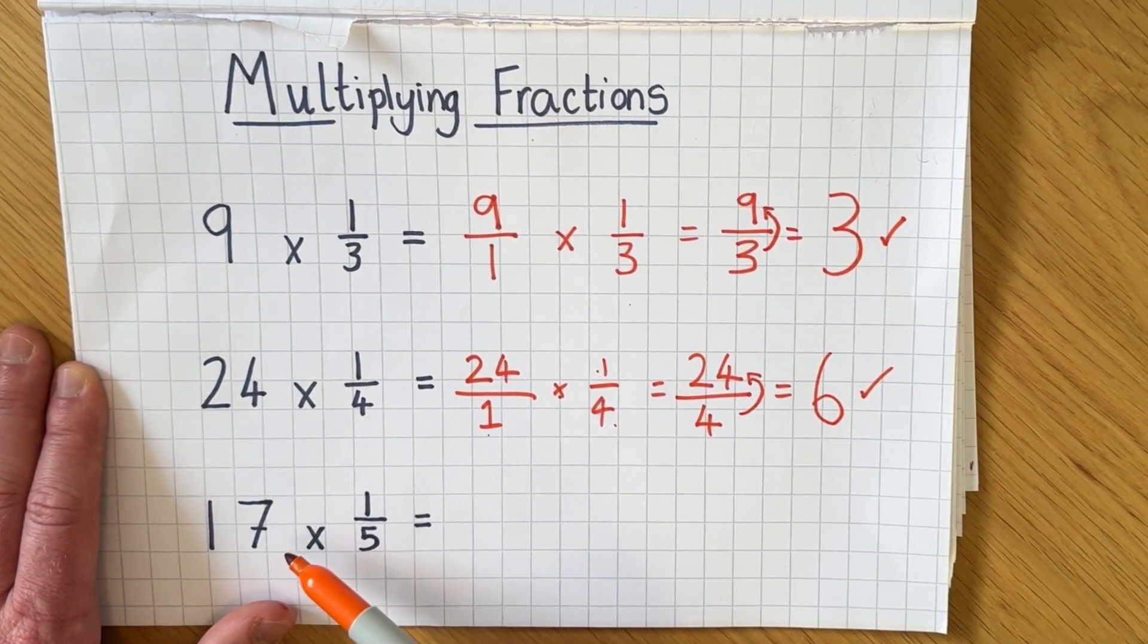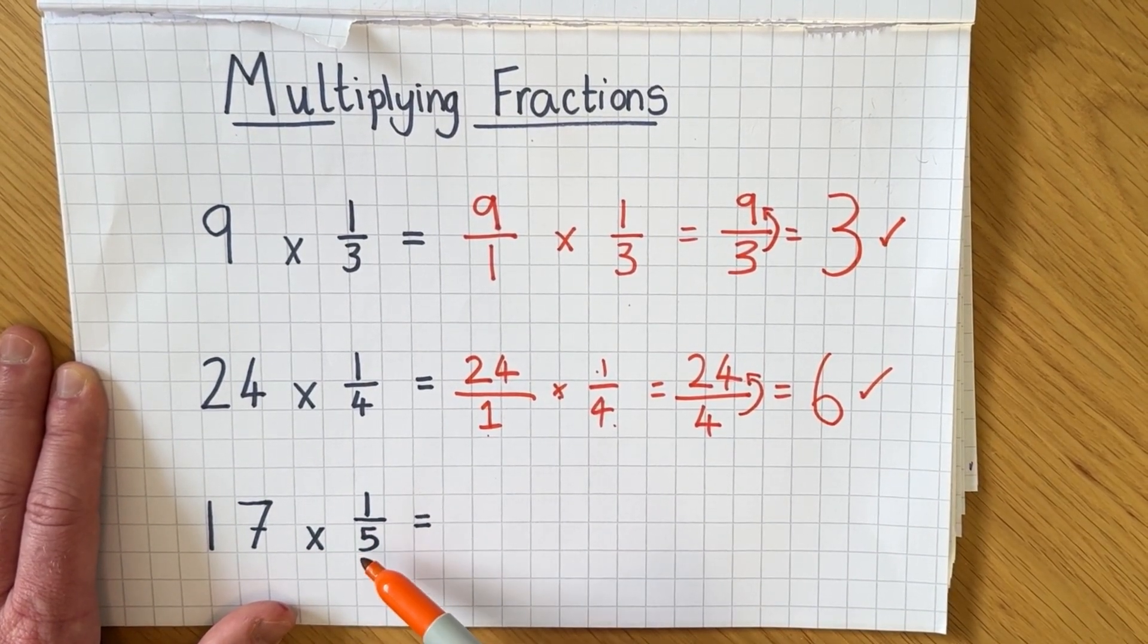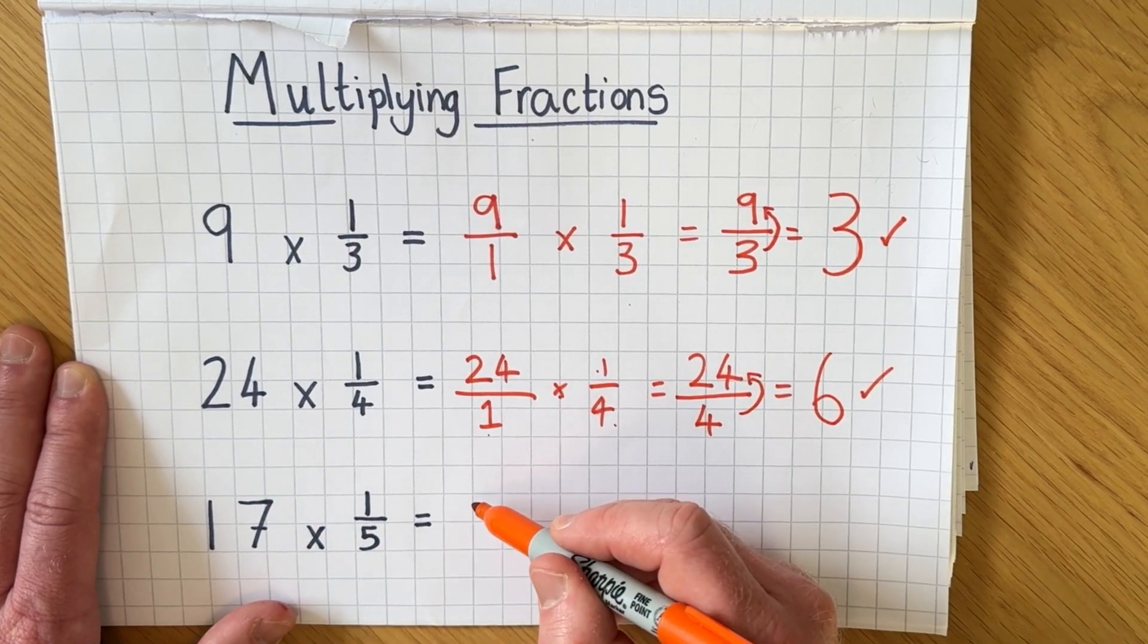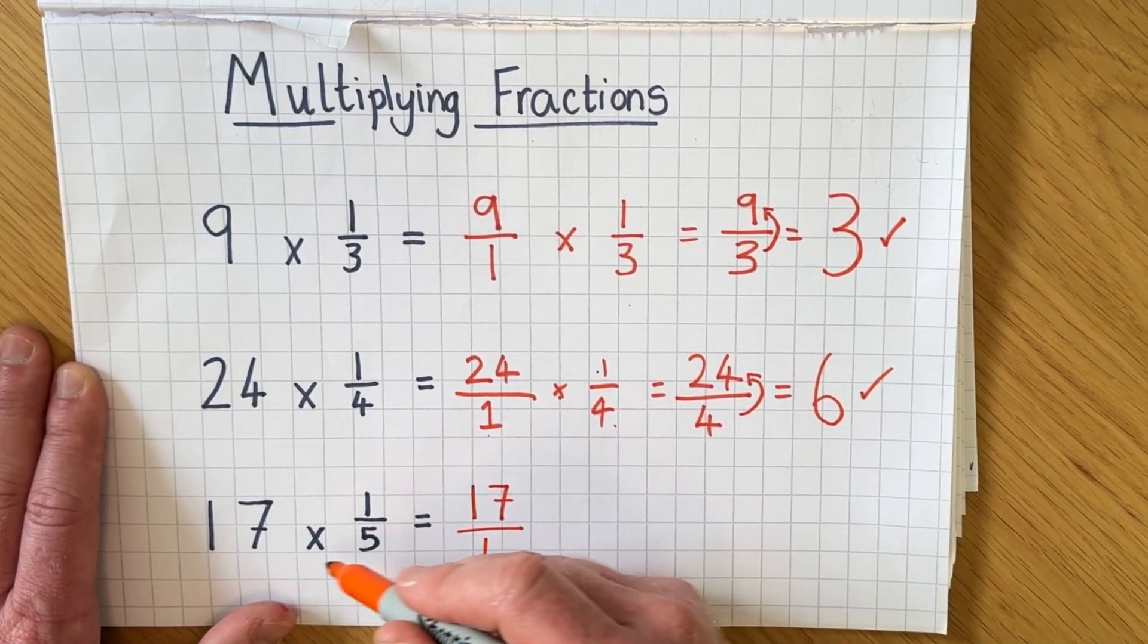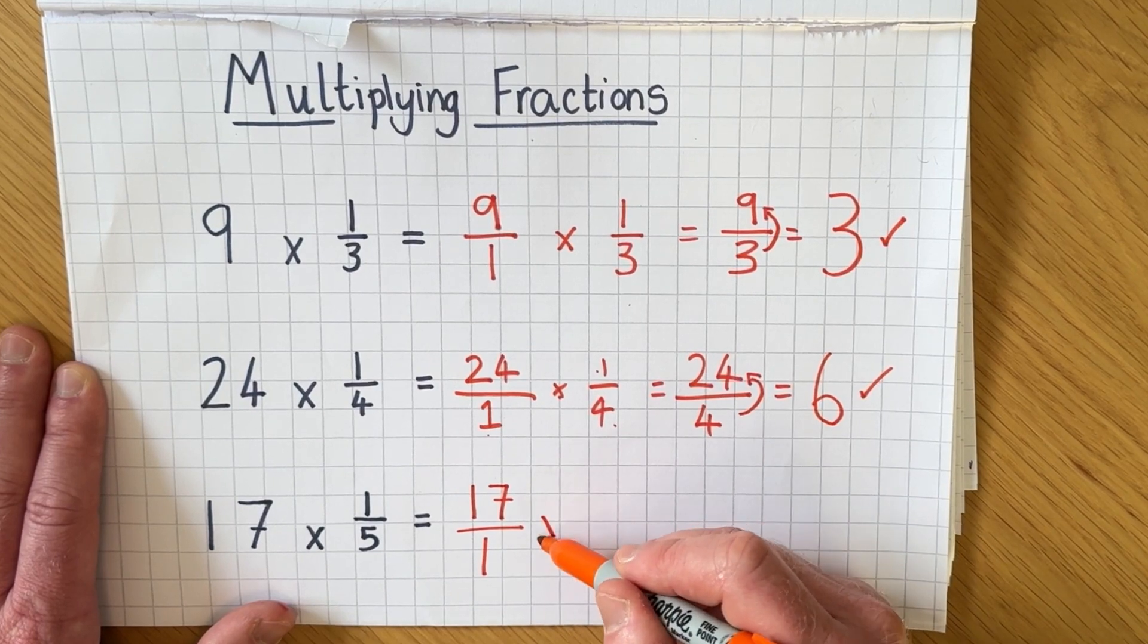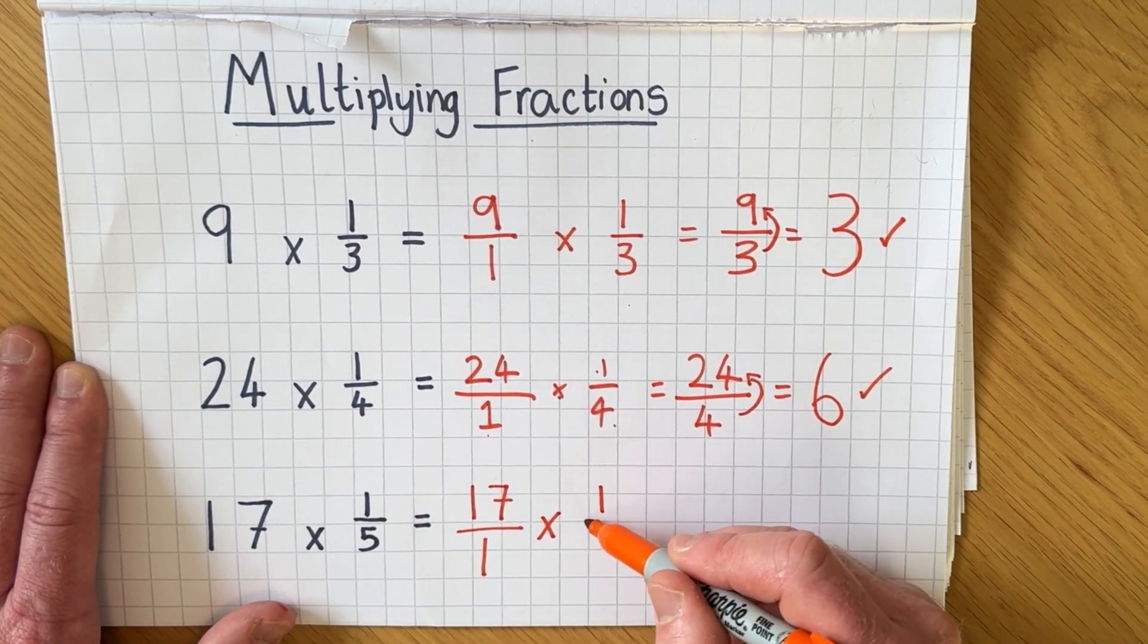So we've got 17 multiplied by 1/5 so I'm going to change the 17 into an improper fraction 17/1 then I'm going to multiply it by 1/5.